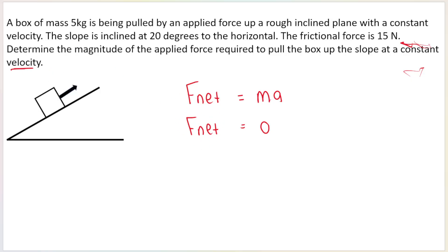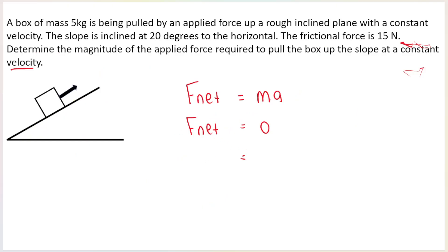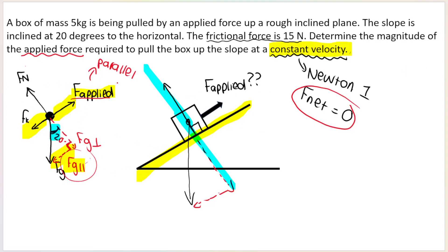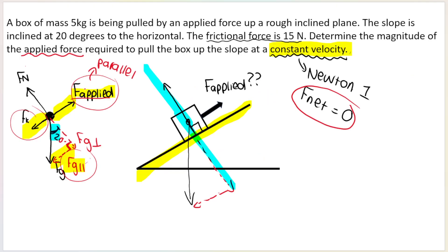F net refers to all the forces acting parallel to the slope. I care about the parallel forces because F applied is parallel to the slope. So under F net: F applied plus Fk plus FG parallel, and the sum of those adding together must give me zero. We do not use the perpendicular forces FN and FG perpendicular, because I'm not looking for either of those.